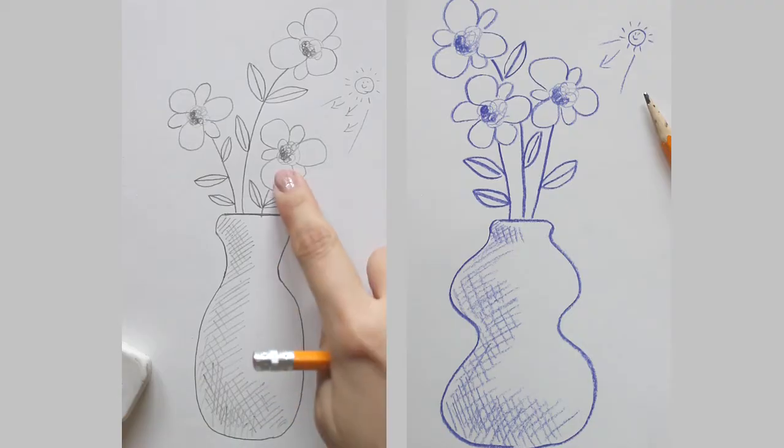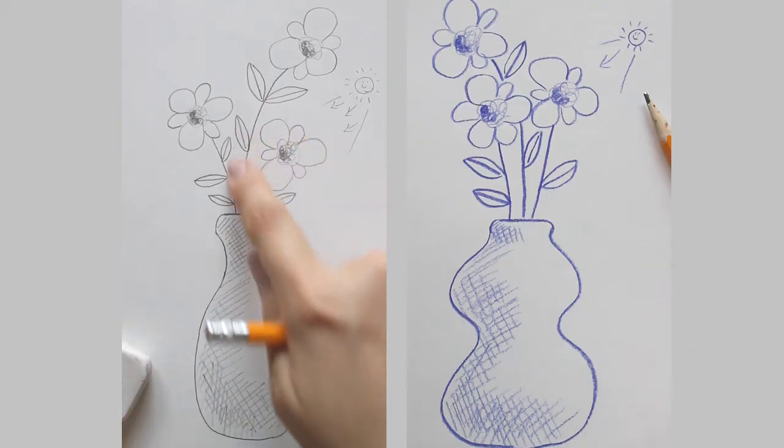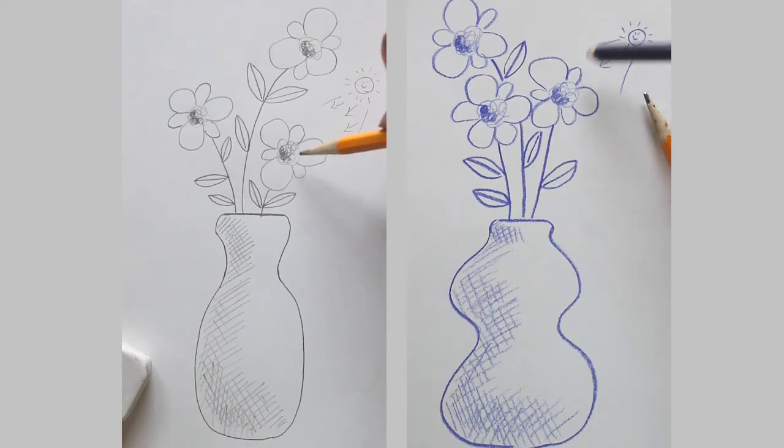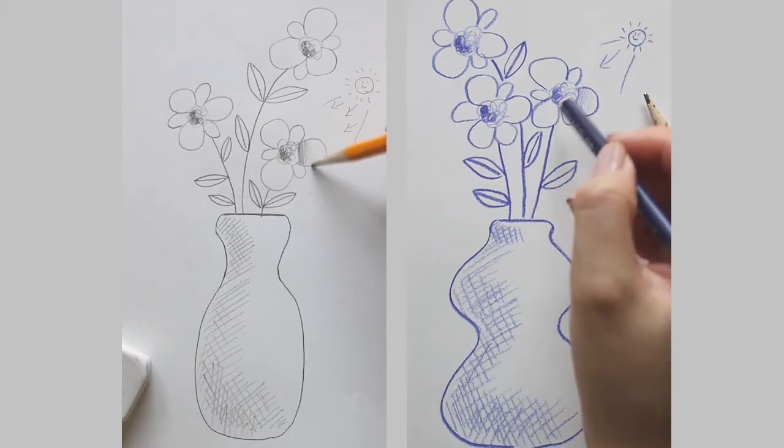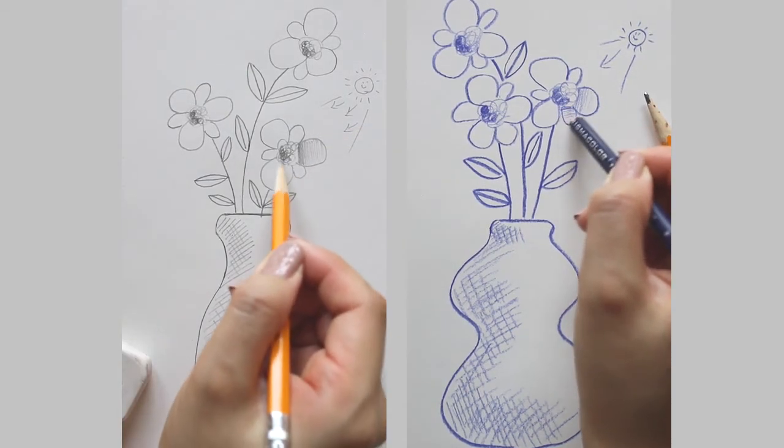For each petal, I'll be using hatching to make the inner parts that's closer to the center of the flower darker and gradually sketch lighter and lighter as we hatch toward the outer areas of the petals.